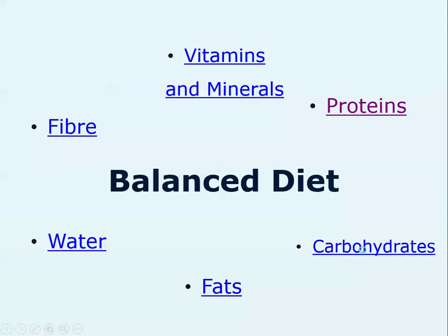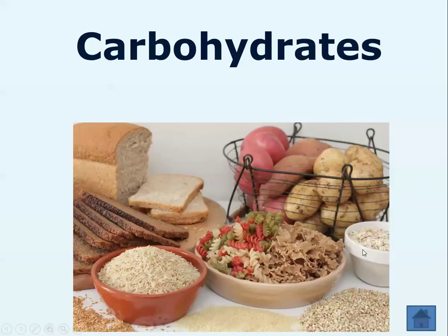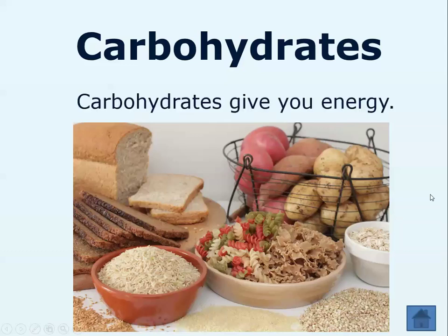Moving on to carbohydrates — these come in lots of different forms: bread, rice, pasta, oats. If you have porridge, that's a really good source of carbohydrates; people tell you to have porridge in the morning because it gives slow release of energy. And that's exactly what carbohydrates are for — they give you energy. Potatoes are also a good source.